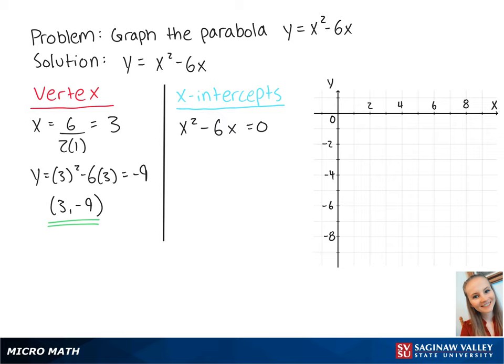The left side factors out to become x times x minus 6 equals 0. Now we have x equals 0 or x minus 6 equals 0, which becomes x equals 6.